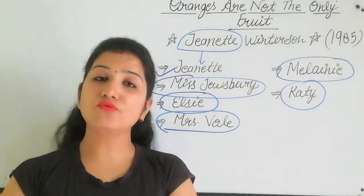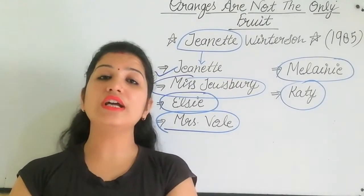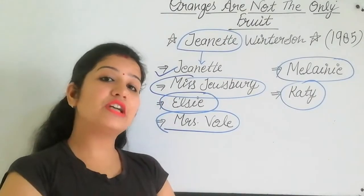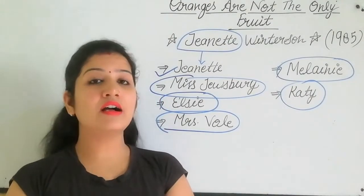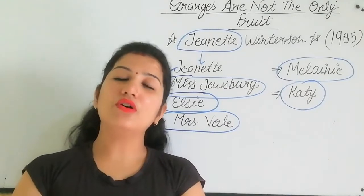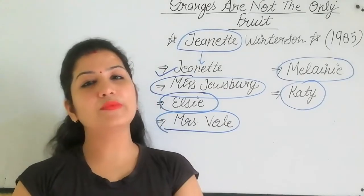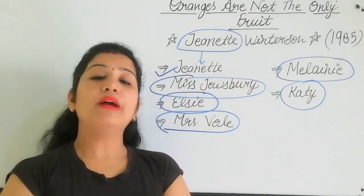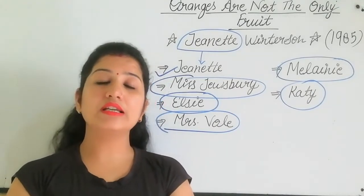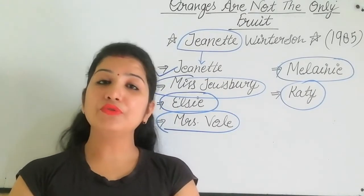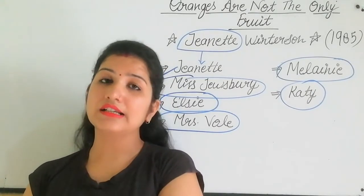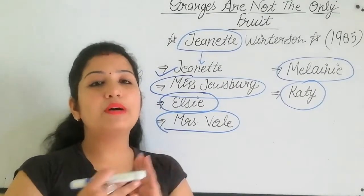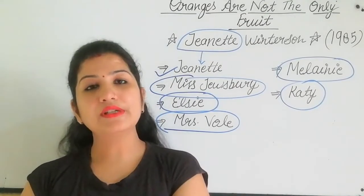Janet is cast out without food, without money, without any resources, without any roof over her head. During this time she takes on various kinds of jobs, including work at mental hospitals, to survive.